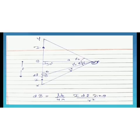Now we will apply Biot-Savart law for the small current element: dB equals μ₀/4π times I dL sin θ upon R². Now we will integrate it. After integration, we will get the total magnetic field due to the straight current-carrying conductor.